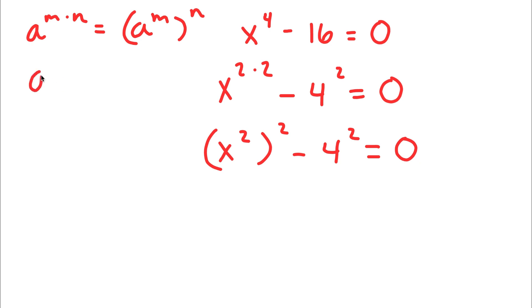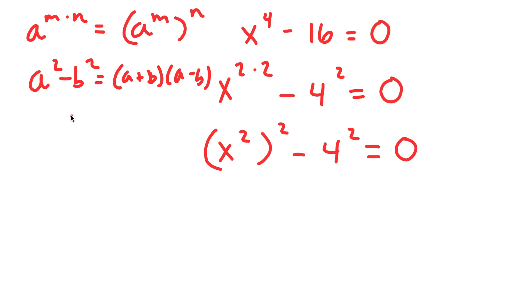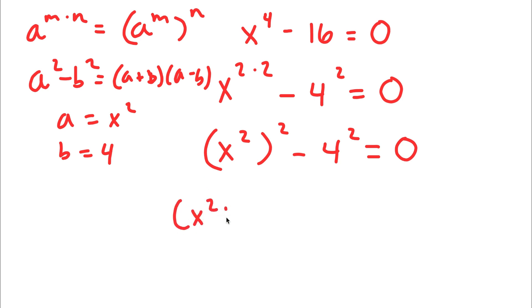Now, if I have something in the form a squared minus b squared, this is equal to a plus b times a minus b. So in this case, a is equal to x to the power of 2 and b is equal to 4. So I have x to the power of 2 plus 4 times x to the power of 2 minus 4 is equal to 0.